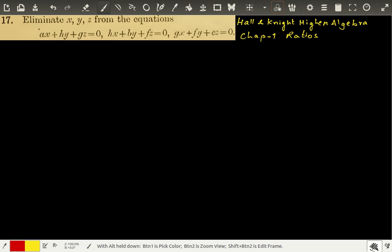This is problem number 17. Eliminate x, y and z from equations: ax plus hy plus gz equals 0, hx plus by plus fz equals 0, and gx plus fy plus cz equals 0.